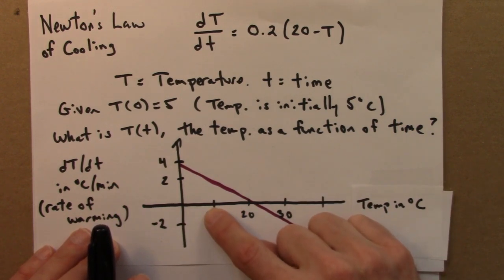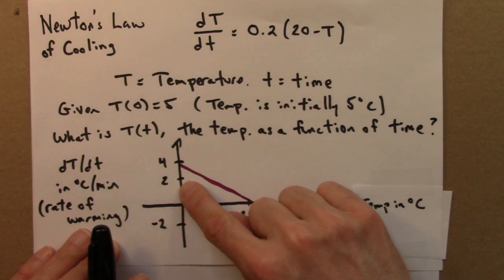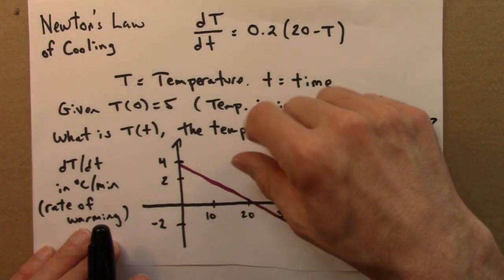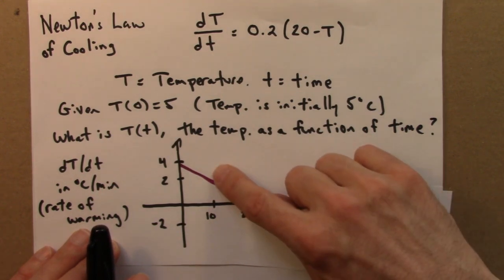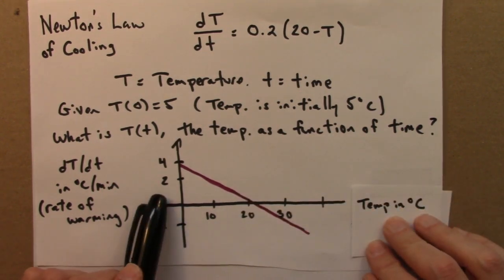If we're at 10 degrees C, then this says, and I'm sorry the scale is off a little bit, but if we're at 10 degrees C, then we're warming up at 2 degrees per minute.